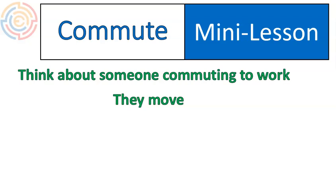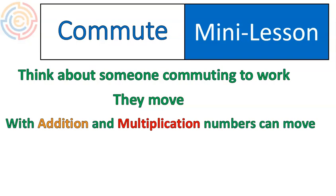Commuting is when you're moving. With addition and with multiplication, numbers can move, and it's okay. It does not change the value of the expression. Let's take a look at an example. I can say 4 plus 3 is equal to 3 plus 4. Notice the numbers moved, but they're both still equal to 7. 4 plus 3 is 7. 3 plus 4 is 7. It's fine. It's okay to move numbers when you just have addition.